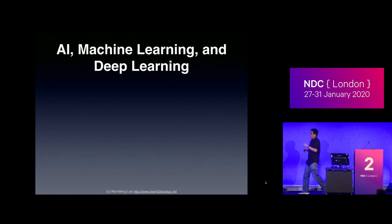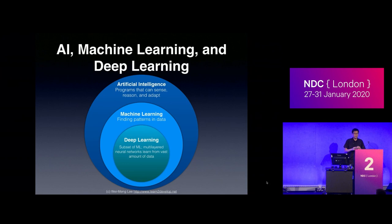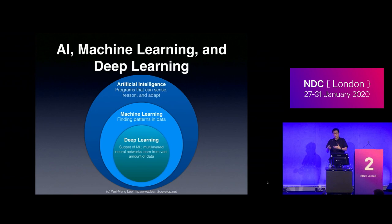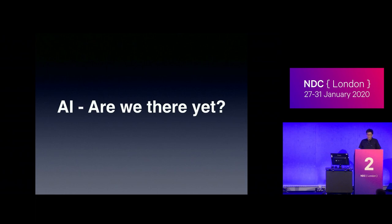When people talk about AI, two more terms always come along: machine learning and deep learning. AI is the broadest — as long as something resembles decision-making by human beings, it's classified as AI. Within AI, you have machine learning, which puts into practice concepts like linear regression and logistic regression. And a subset of machine learning is deep learning, which is the focus of this talk. There's a joke in the industry: if it works, it's not AI.